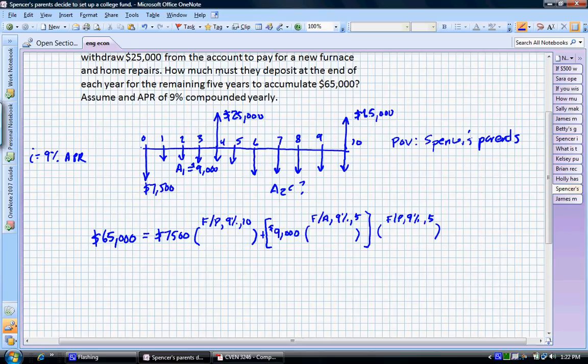That's what we've done in this first part and then what we're going to do is we're going to take that sum that's accumulated and accumulate that even more for the next five years where it's going to be earning 9% interest and sitting in that account.